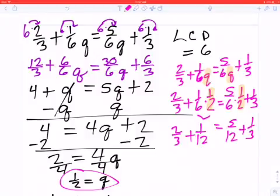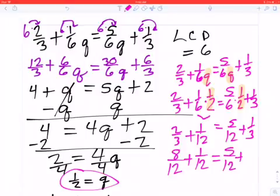I have to get common denominators here. So this one becomes 8/12 plus 1/12. This one becomes 5/12 plus 4/12. And as you can see, I get 9 over 12 for this side, which is also equal to 9 over 12 for that side. So I know for a fact that I did this question correctly.